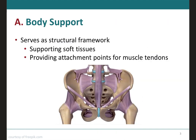The first function is body support, where the skeleton serves as the structural framework for the body by supporting the soft tissues and providing attachment points for the tendons of most skeletal muscles. This image shows the pelvic girdle, made up of the two coxal bones, and you can see all the ligaments holding these bones together to give the body structural support. Without the skeletal system, we would be a limp mass of organs, muscles, and skin.